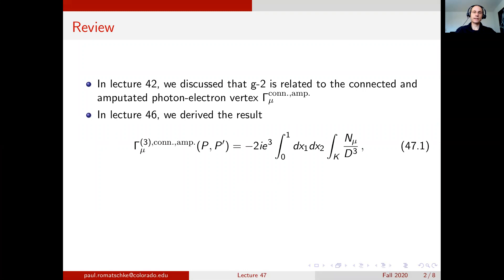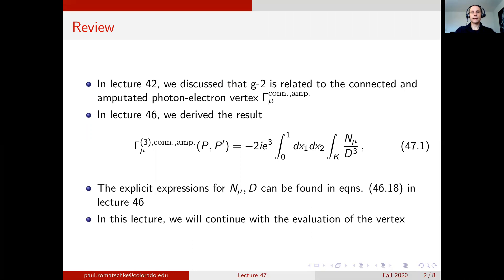In lecture 46, we derived the result for this electron-photon vertex that is given as minus 2i e cubed, an integral over two Feynman parameters x1 and x2, and an integral over Euclidean momentum k of a numerator and a denominator. The explicit expressions for the numerator and the denominator can be found at the end of the lecture notes in lecture 46. In this lecture we will continue with the evaluation of this vertex.